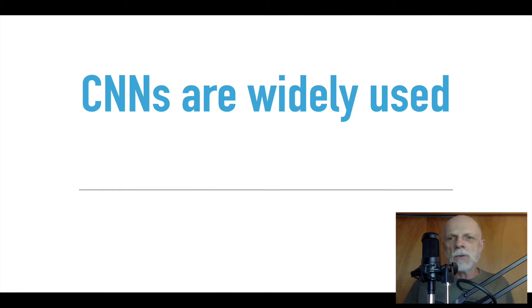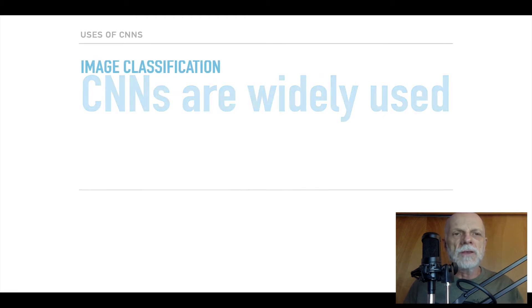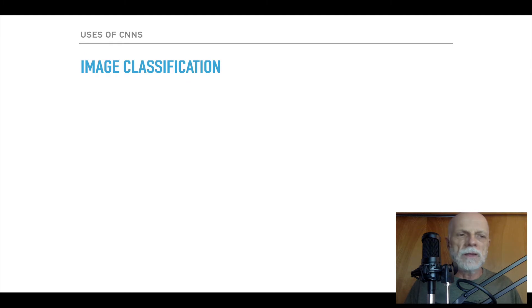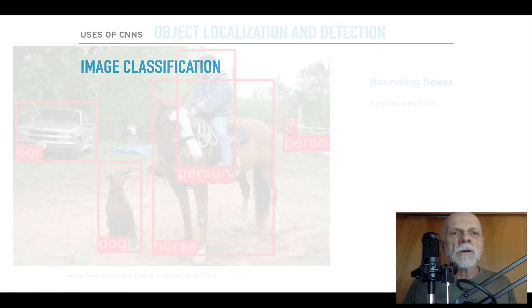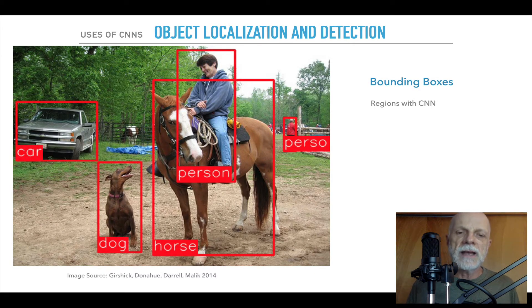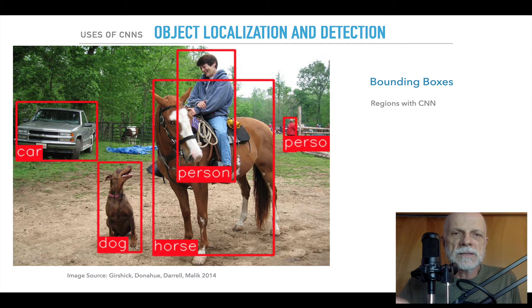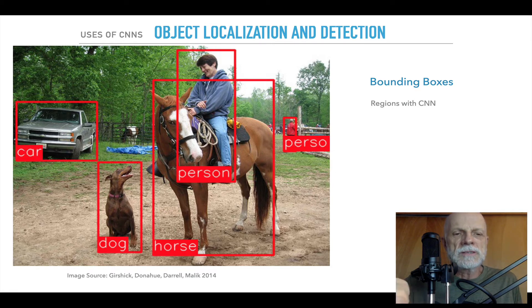CNNs are widely used. The first example is image classification — can we tell the difference between a dog and a cat, or the number four versus the number three? But they're also used in object localization and detection, where instead of just saying that's a picture of a dog, the task is to find the different objects in a picture. It creates bounding boxes of where in the picture things are — the persons in this area, the horses here, the dogs there.